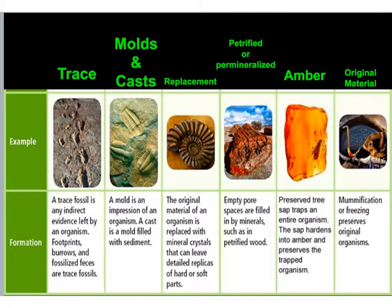Amber is maybe the most famous type because of the Jurassic Park movies. It's tree sap that's believed to have hardened, and sometimes that sap captures little critters inside of it — there's your amber fossil. Original material is the actual organism itself — maybe a human mummy or a frozen mammoth. It's something we dig up that's the actual organism preserved: its original skin, its original hair, and so forth.